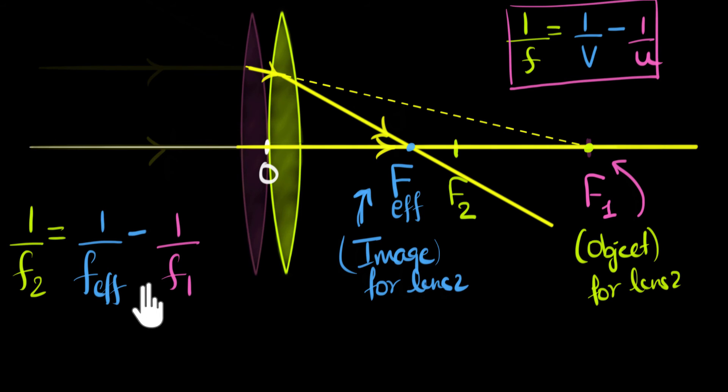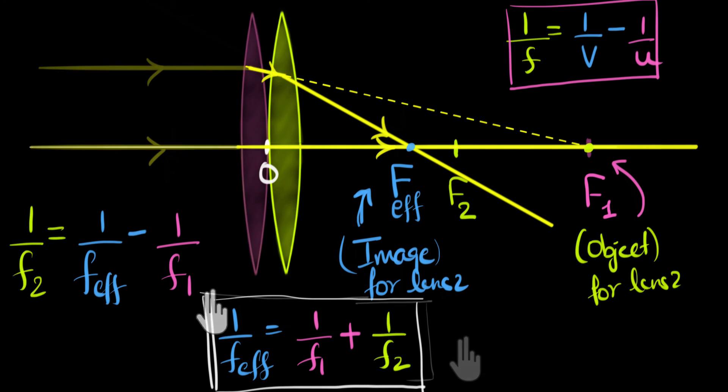So to figure out what this is, all we have to do is add 1 over F1 on both sides. So 1 over F effective is going to be, since we're adding it on both sides, we'll get 1 over F1 plus 1 over F2. And there we have it. That is the connection between the effective focal length and the individual focal lengths.